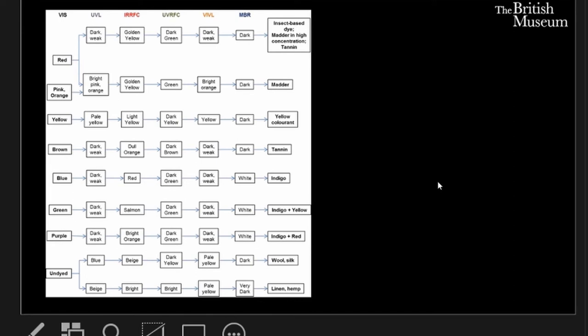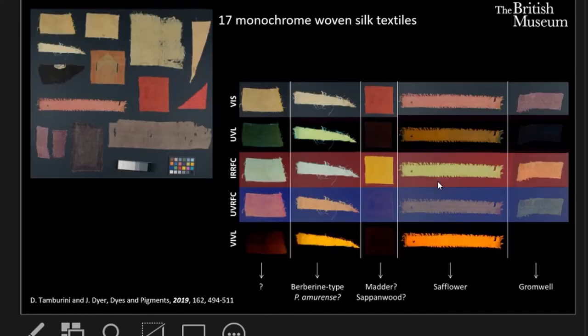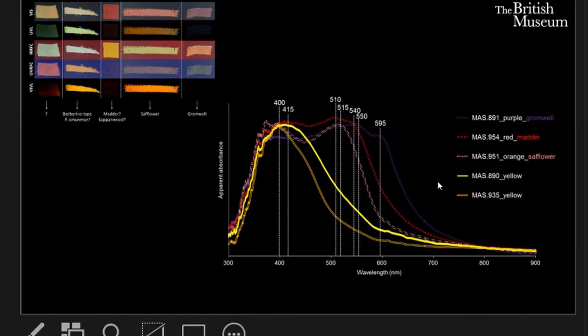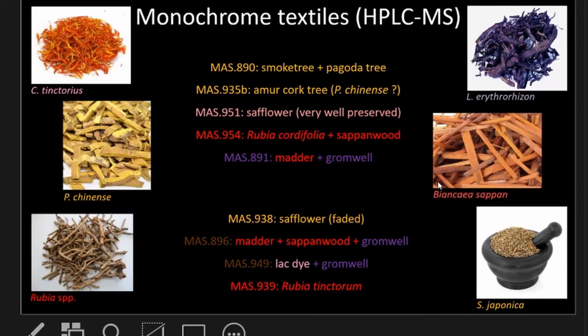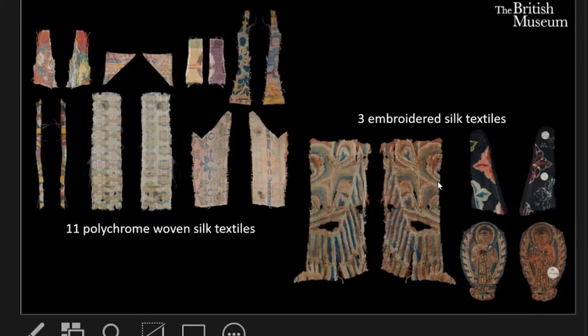This approach can also be applied to much more complex textiles and different classes of dyes. For example, we recently worked on a selection of 7th to 10th century textiles from Dunhuang in China. Seventeen of these were monochrome woven silk textiles, which allowed us to characterize the response under different wavelengths of light of important dyes such as safflower, gromwell, and yellow berberine-type dyes. The multispectral imaging was supported by other non-invasive methods such as FORS, which further deepened this characterization, and ultimately by HPLC analysis.